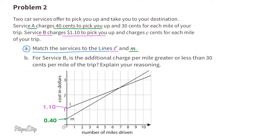Match the services to the lines L and M. The y-intercept for line L is just a little bit greater than 1. That represents the service charge, which is $1.10, a little bit more than $1. So line L would match up with service B.